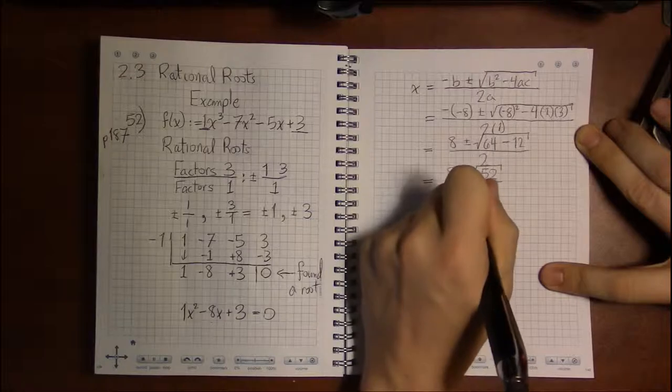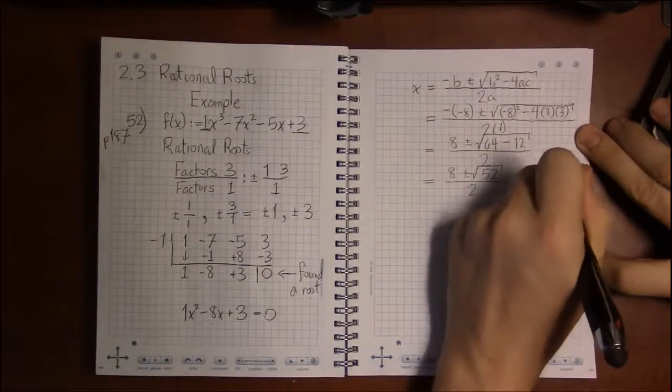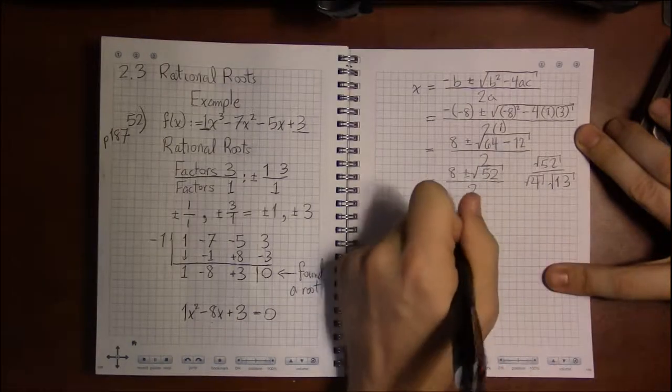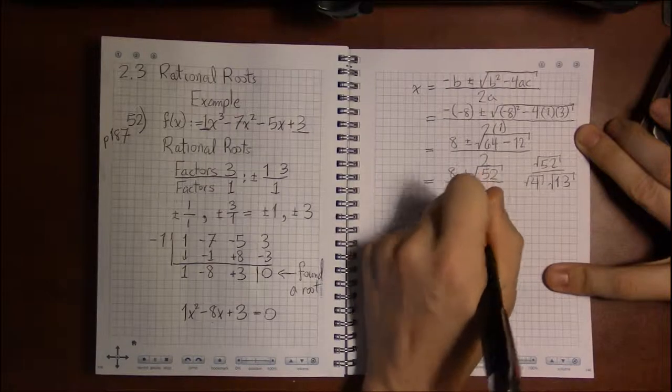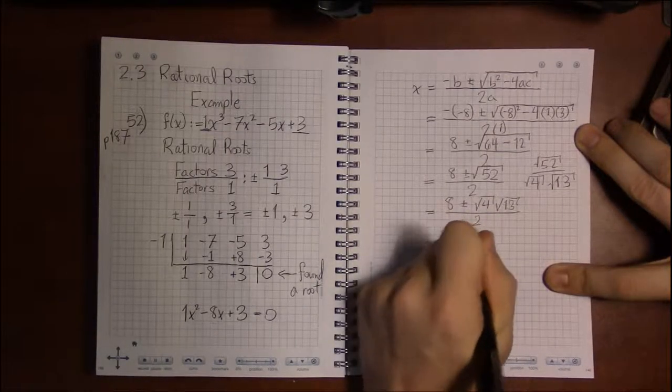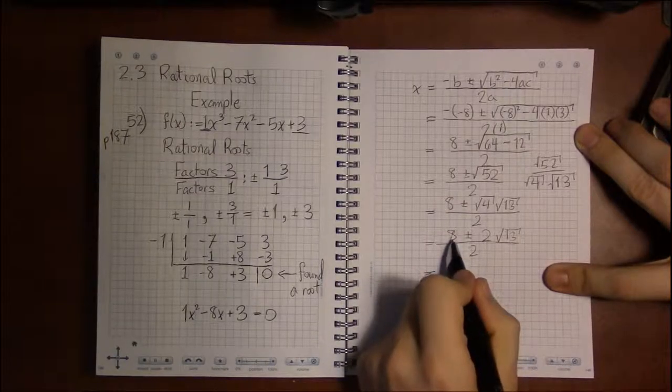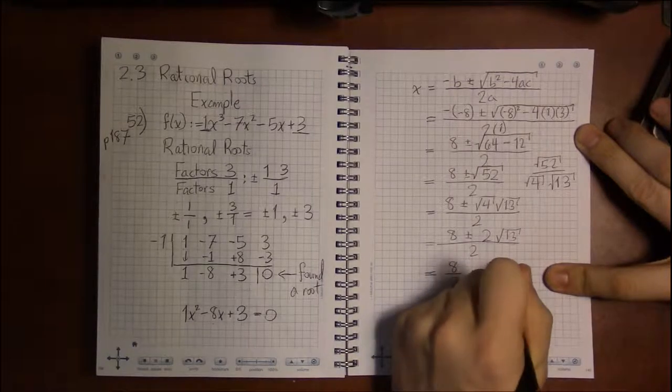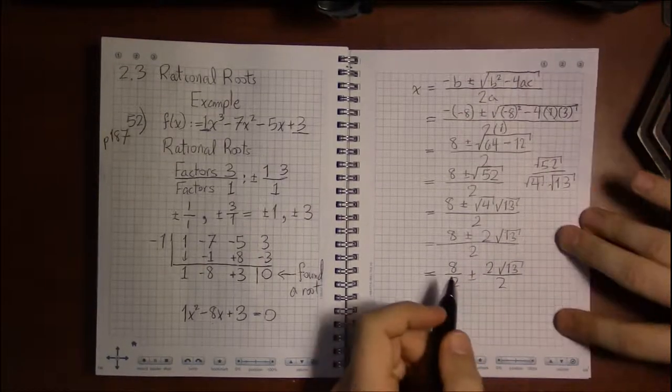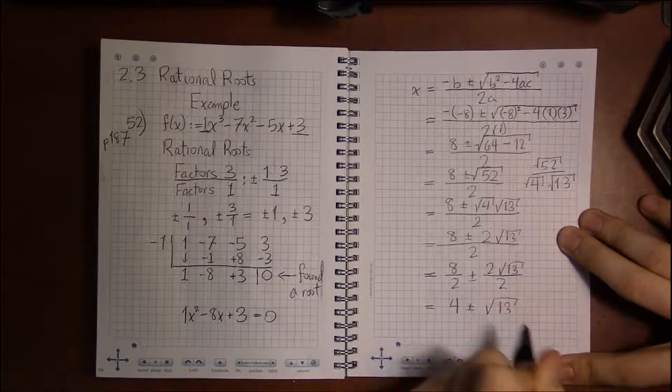And I believe 4 goes into 52. 52 is something like 4 times 13. So the square root of 52 is the square root of 4 times the square root of 13. And I can't break that down any further because 13 is prime. So this is 8 plus or minus 2 square roots of 13 divided by 2. Which means that 8 over 2 plus or minus 2 root 13 over 2. I can do this if I put 2 under everything. Then I can cancel. 4 plus or minus square root of 13.